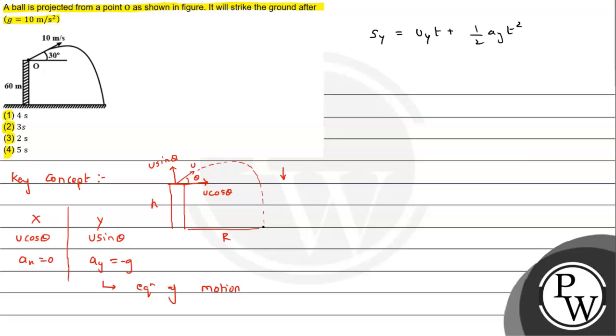Just we have to put the values. s_y will be the displacement in y: the particle moves 60m downward, so negative 60. Initial velocity along vertical will be 10 sin theta.